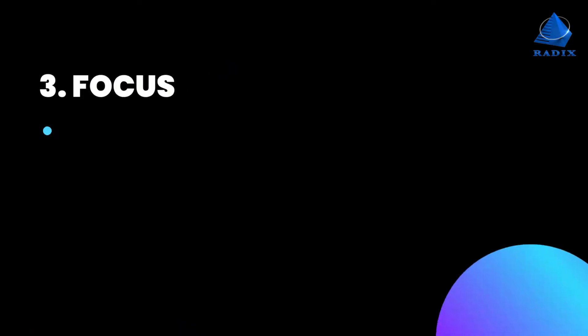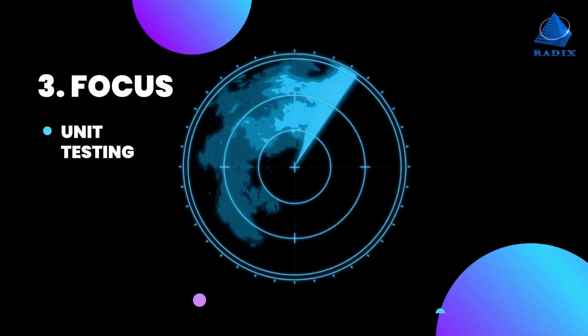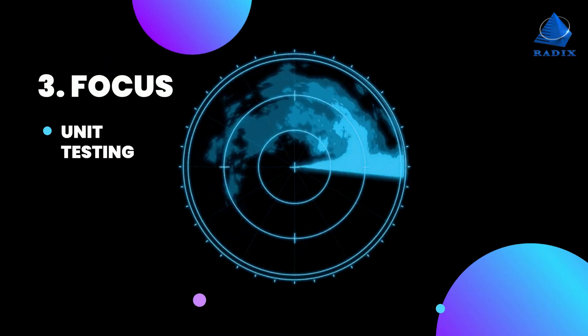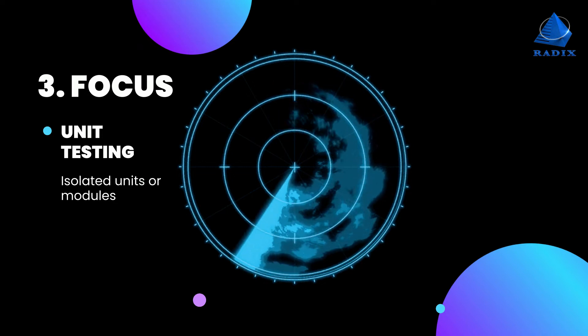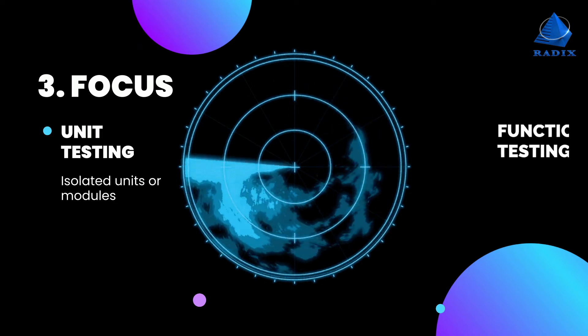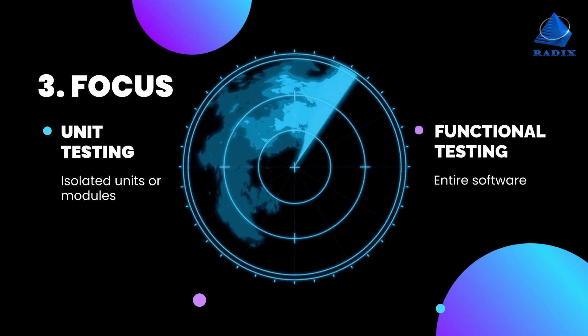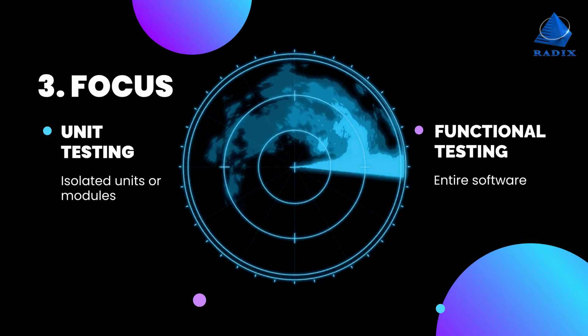3. Focus: Unit testing is focused on isolated units or modules, whereas functional testing focuses on the entire software.